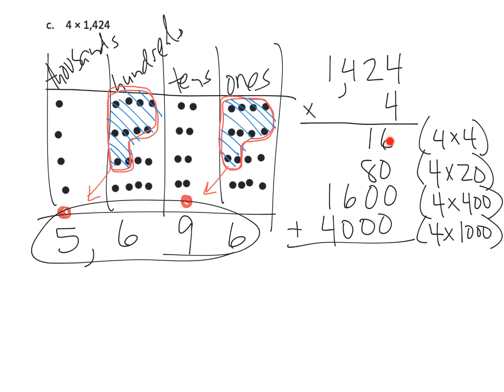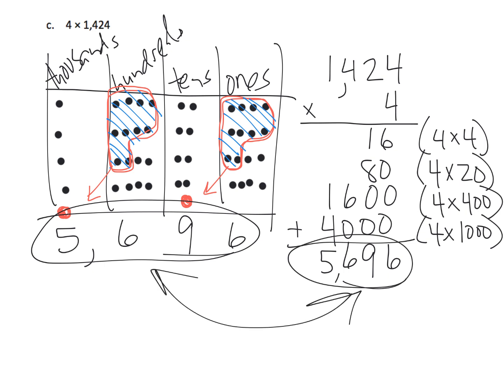Let's add our partial products over here and see if we get the same thing. Teachers, notice how I really worked hard to stack these in columns nice and neat — you may need to give your students graph paper to keep their numbers lined up. When we add our ones together we get six ones; our tens together give us nine tens; our hundreds together give us six hundreds; and our thousands together give us five thousand. So we end up with five thousand six hundred ninety-six, which matches — so we did it right.